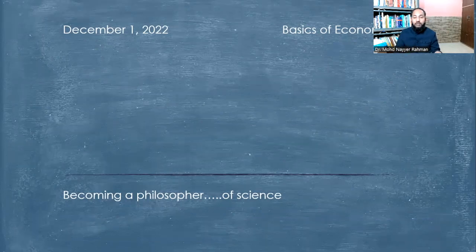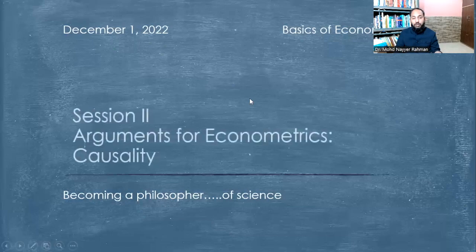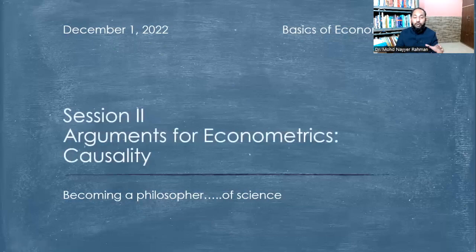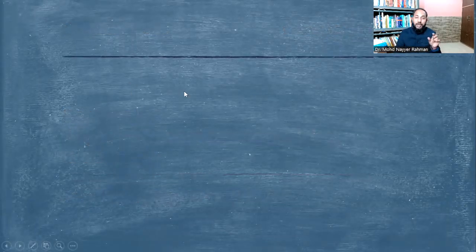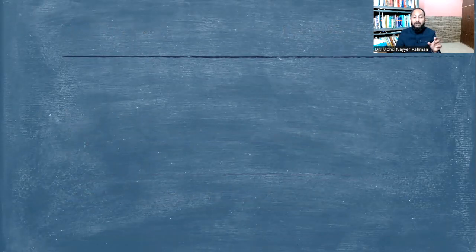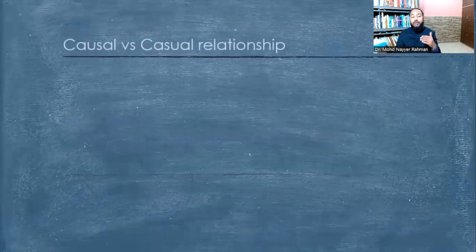In the second session, we are going to focus on arguments for econometrics — that is, causality as the foremost argument of econometrics. We have to understand causality because causality is actually about developing and investigating cause and effect relationships between two or more events.